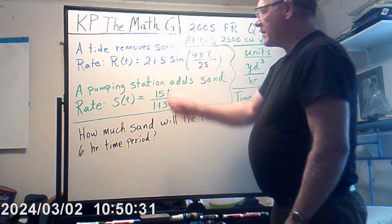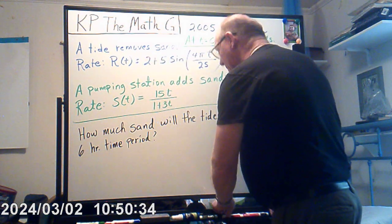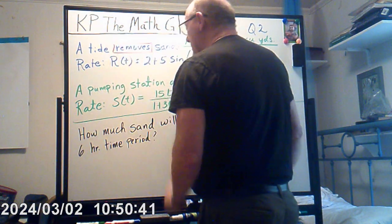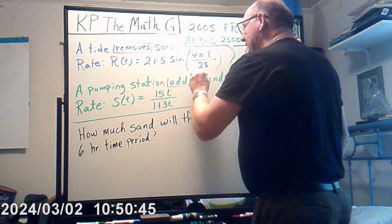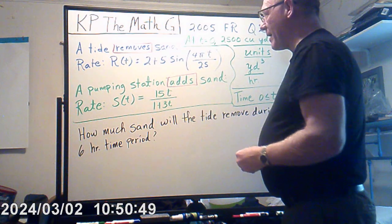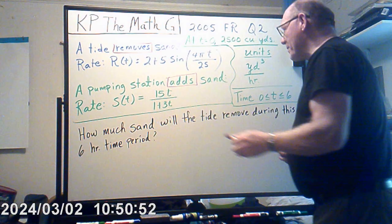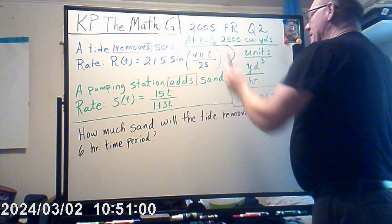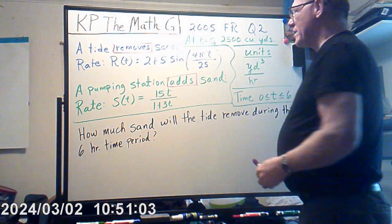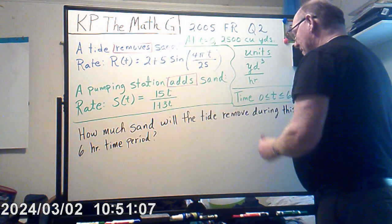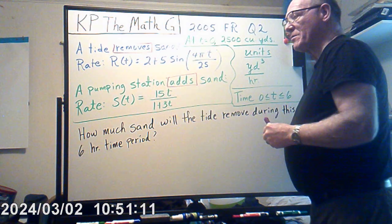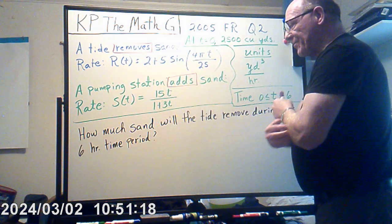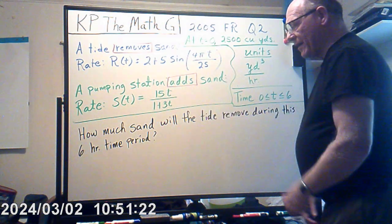A key point: the tide removes sand and the pumping station adds sand. Keep in mind that the units are in cubic yards per hour. At t equals 0, the beach already has 2500 cubic yards of sand, and the time interval we're looking at is t between 0 and 6 hours.